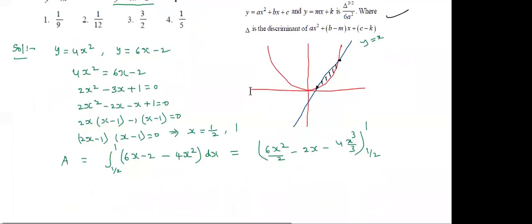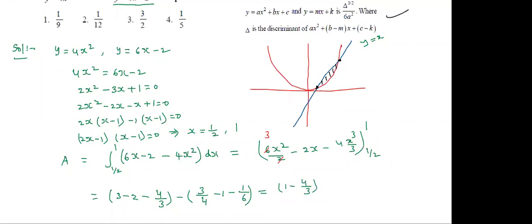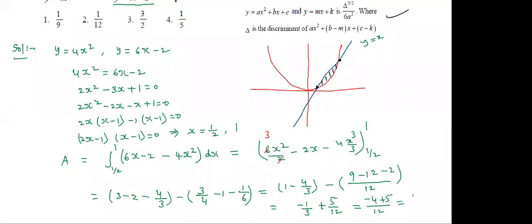Simplifying: at x=1, we get 3 - 2 - 4/3 = 1 - 4/3. Taking LCM 12: numerator = 12 - 16 = ... Continuing the calculation: (3×4 + 5)/12 = (12 + 5 - 12 - 5)/12, working out to 1/12. The second option is correct.